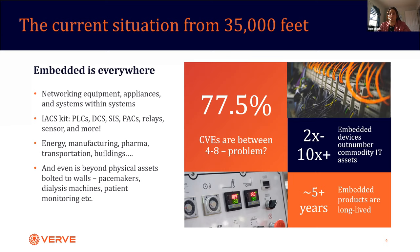Embedded is everywhere — you can't get away from it. Even physical assets bolted to the walls, the same principles apply to pacemakers and dialysis machines. Now, looking purely at CVEs — yes, it's a broken metric, but it is a metric — 77.5% of CVEs are between levels 4 and 8, and the average is around 6.6. That's telling us there's a lot of vulnerabilities we're not focusing on. Most companies focus on the nines and tens. I would argue to look more at the low-mediums because those are often combined with the more serious ones in a successful attack.